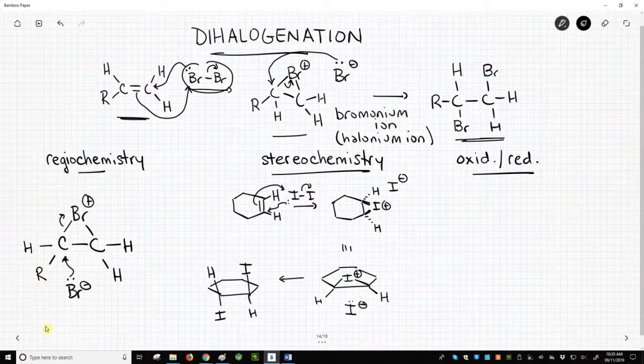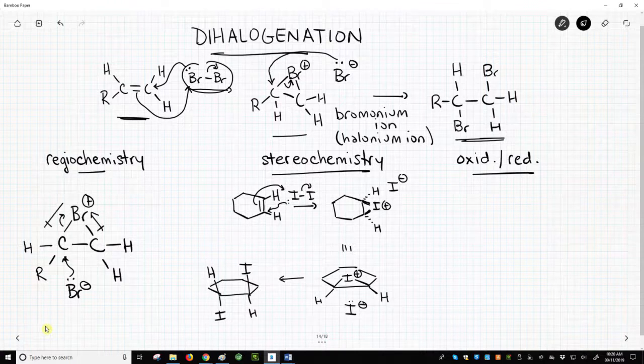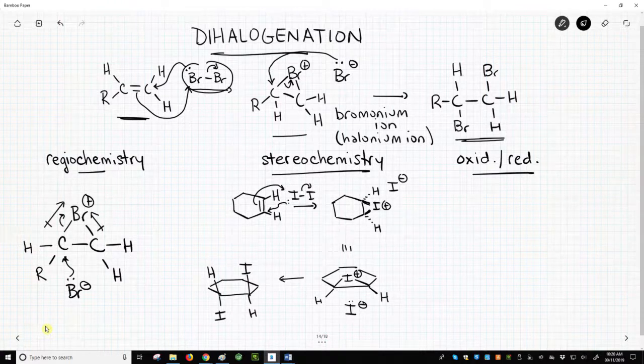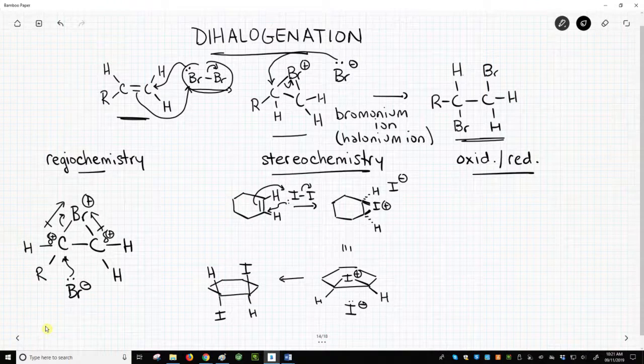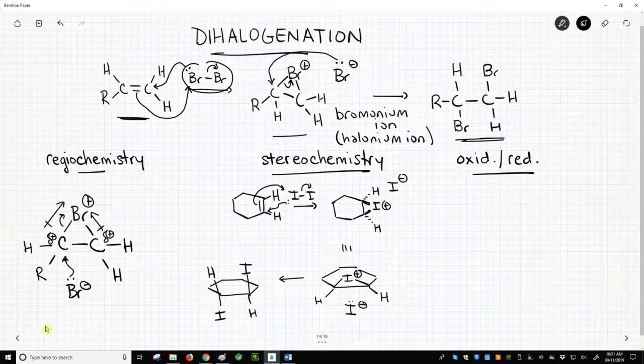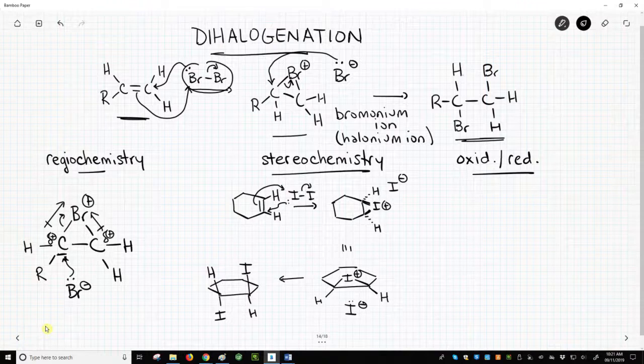Why? These carbon-bromine bonds are polarized with a partial plus on each carbon. That makes these carbons partial carbocations. Because the carbon on the left is more substituted, it is more willing to bear a larger partial positive charge, so it becomes more electrophilic and attracts the nucleophile.